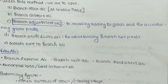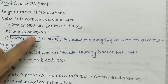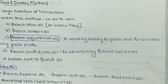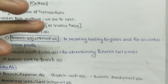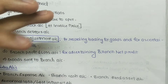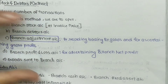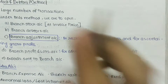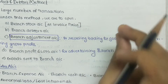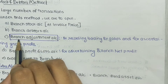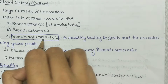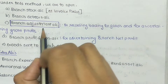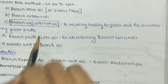The Branch Adjustment Account is maintained for recording loading on goods and for ascertaining gross profit. In the Branch Stock Account we write amounts at invoice price, which contains cost plus a profit element. That profit element recorded in the Branch Stock Account needs to be eliminated in the Branch Adjustment Account. The balancing figure of the Branch Adjustment Account will be gross profit or gross loss.